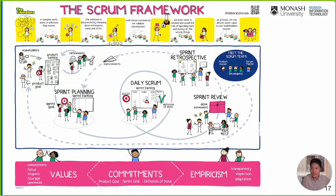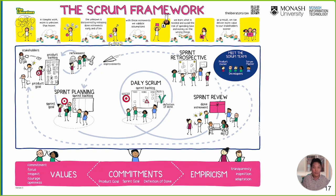What is Scrum? In complex work, more is unknown than known. For example, when you start developing an app without analyzing the requirements, you never think about things like multi-factor authentication, whether to use email as a username, how to decide the class, or what data attributes to store — there are so many unknowns. The unknown is discovered by releasing done increments early and often. For assessment one, you already analyzed the requirements, so you started to think about the unknown things. Another unknown is acceptance criteria — when you haven't developed the application, you have no idea how to test it or ensure the end user is satisfied. We validate assumptions with each increment, learn what is needed, and avoid spending time and money on the wrong things.